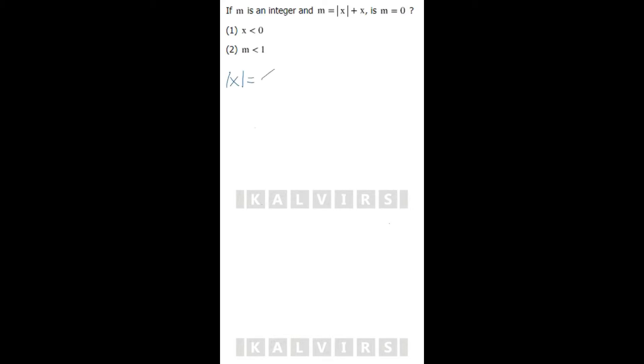Absolute value of x has two options, two splits. When x is greater than or equal to zero, it is x. When x is less than zero, it is negative x. So this is the first thing that we have to do: split this.